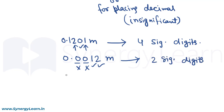In measurements starting with a decimal and having initial zeros before the first nonzero digit, those zeros are insignificant because they have simply come to place the decimal.